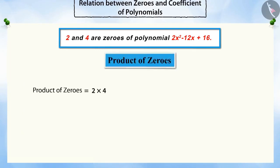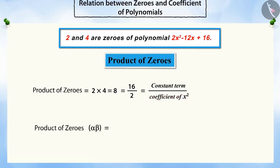Similarly, if we multiply the zeros, you will see that the product of the zeros is equal to the ratio of the constant term to the coefficient of X squared of the quadratic polynomial.